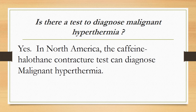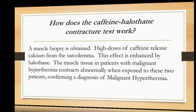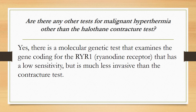Is there a test to diagnose malignant hyperthermia? Yes, in North America the caffeine-halothane contracture test can diagnose malignant hyperthermia. A muscle biopsy is obtained; high doses of caffeine release calcium from the sarcolemma, and this effect is enhanced by halothane. Muscle tissue in patients with malignant hyperthermia contracts abnormally when exposed to these two agents, confirming the diagnosis.